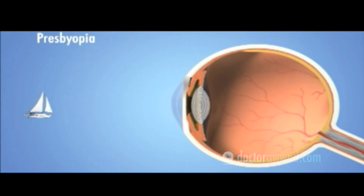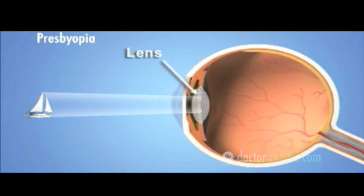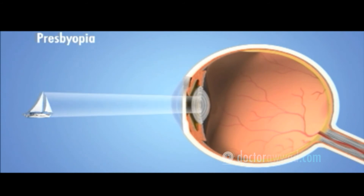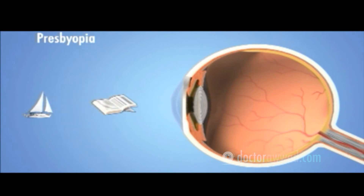Presbyopia is a normal condition associated with age, and it causes problems with near vision. When we are young, the lenses in our eyes are flexible and able to change focus easily between near and far objects. As we age, this flexibility gradually decreases, and at around age 40, many people begin to need corrective lenses for reading.